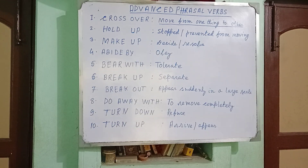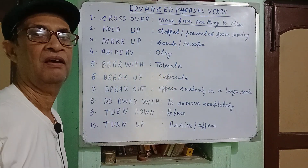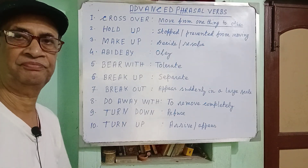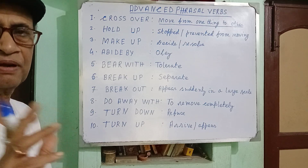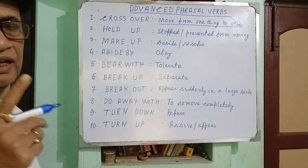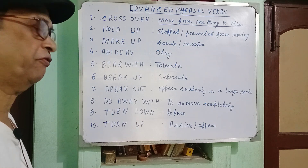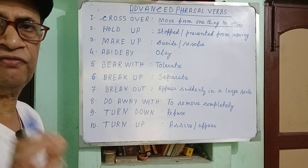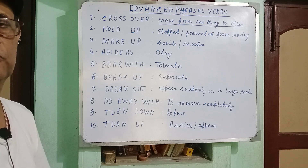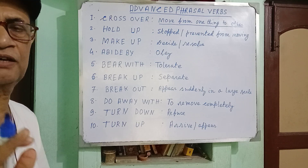Dear viewers, I have already discussed with you what a phrasal verb is. A phrasal verb is verb plus adverbial particle, and they jointly express a single meaning. For example, 'do off your shoes before entering the temple.' Here, 'do off' means to remove your shoes from your feet. 'Remove' is the single word equivalent, and 'do off' is the phrasal verb.